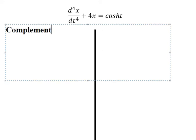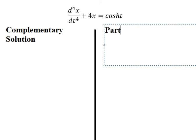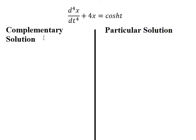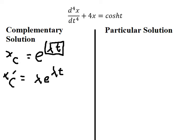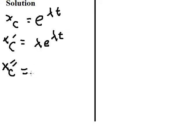For the complementary solution, we put sc equals e to the power of lambda t. We then take the first derivative of sc, which gives us lambda e to the power of lambda t. Taking the first derivative of lambda t gives us lambda. Now we go to the second derivative, and we have the higher-order derivatives as well.